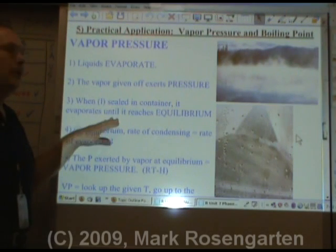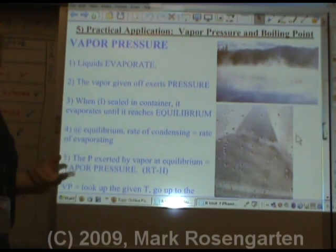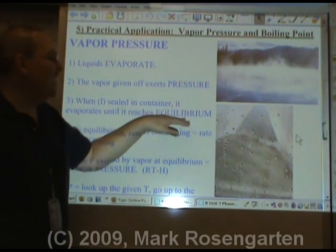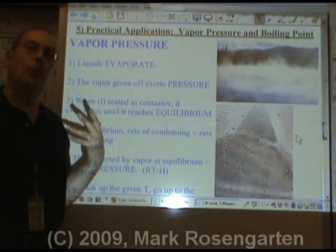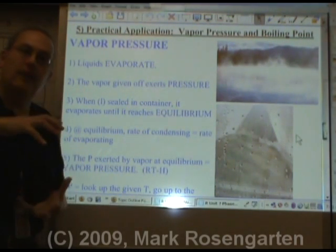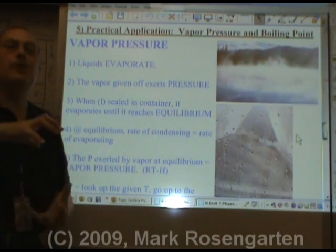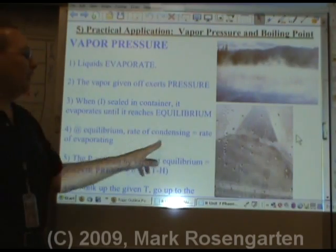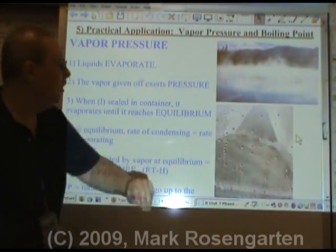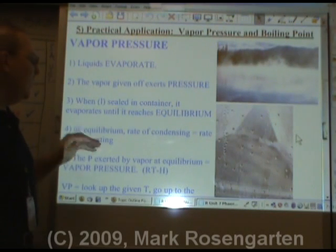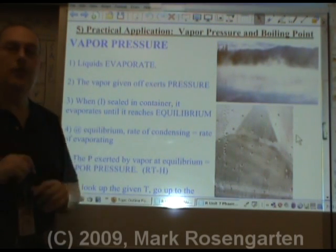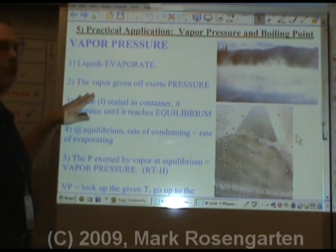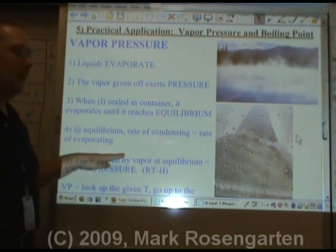When you seal a liquid in a container, it will continue to evaporate until the air in the sealed container reaches what's called vapor-liquid equilibrium. In other words, once the air inside has reached saturation — or 100% humidity — you're at equilibrium, where the rate of condensation equals the rate of evaporation. When you hit that point, you can record the pressure, and that pressure is called the vapor pressure: the pressure exerted by a gas at vapor-liquid equilibrium.